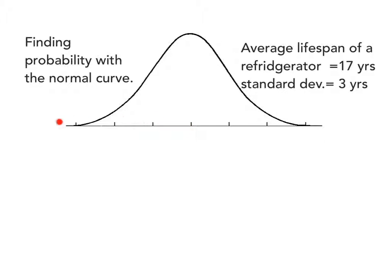We use them typically to describe things that happen in the natural world — things like height, weight, IQ, how fast something is. We can also use them to describe things that are not natural, like the lifespan of certain products.